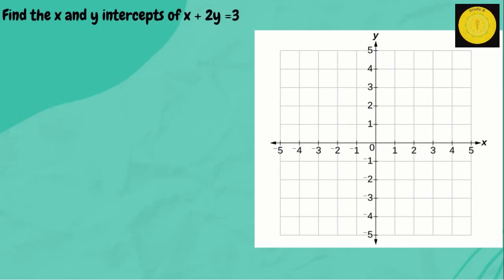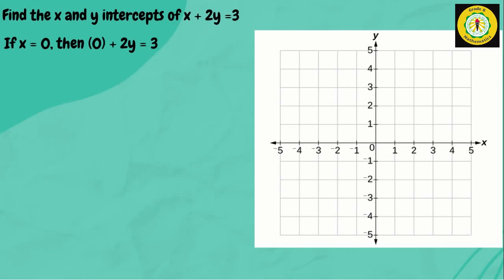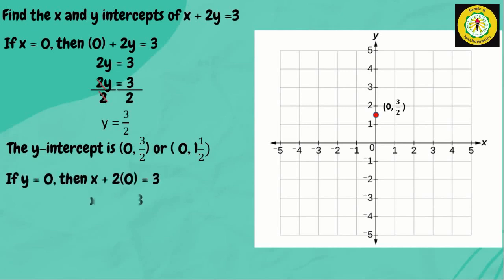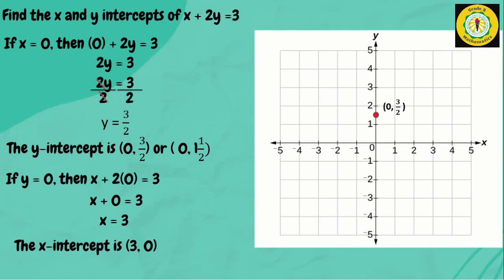Second example: find the x and y-intercept of x plus 2y equals 3. If x is 0, then 0 plus 2y equals 3, so 2y equals 3. Dividing both sides by 2, y equals 3 over 2 — or in mixed number form, 1 and one-half. The y-intercept is (0, 3/2). If y is 0, then x plus 2 times 0 equals 3, so x equals 3. The x-intercept is (3, 0). Let's plot the points and connect with a straight line.